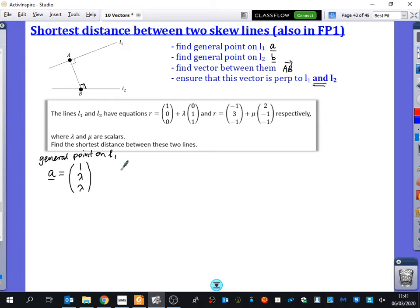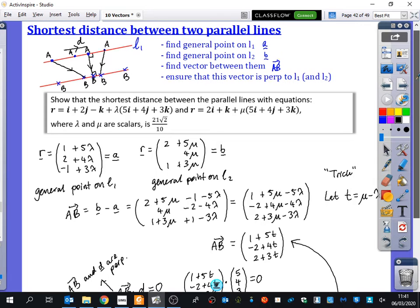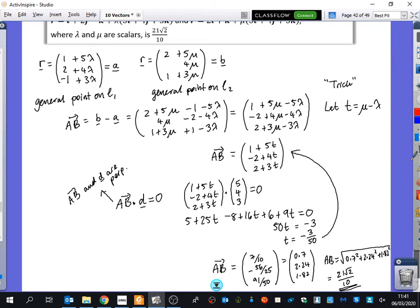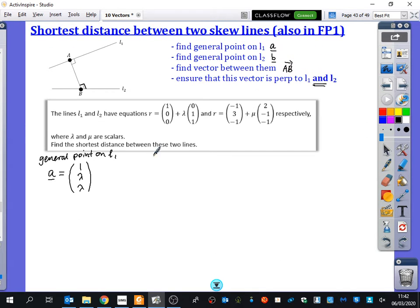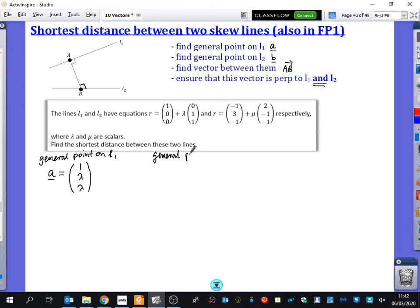When you look at a question like this, if you try to find the information, it's all over the place. So you have to make sure that you're labelling things as you go so you can find out what you're looking for. So the general point on L2, which we're going to call B, is just minus 1 plus 2 mu, 3 minus mu, and minus 1 minus mu.